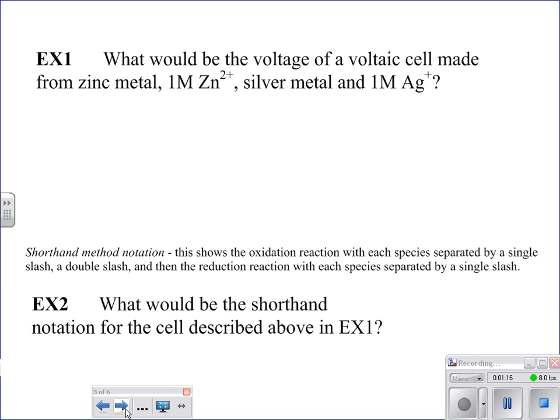Okay, so our first step is to just go through what we've been doing. It says what would be the voltage of a voltaic cell made from zinc metal, 1M zinc ions, silver metal, and 1M silver ions? So notice that everything is at standard conditions here. So we do this just like we've been doing. There's nothing new about this.